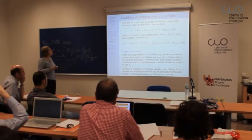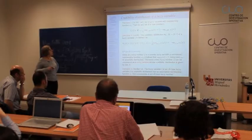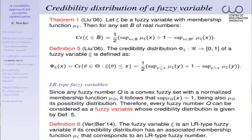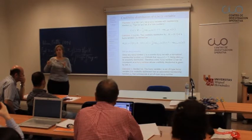It is possible to construct the credibility distribution — that is, for a fuzzy variable based on its membership function. Every fuzzy number can be considered as a fuzzy variable, and the credibility distribution is given by this definition. At this point, we think it will be possible to state the relationship between possibility theory and credibility theory, at least for expected moments.